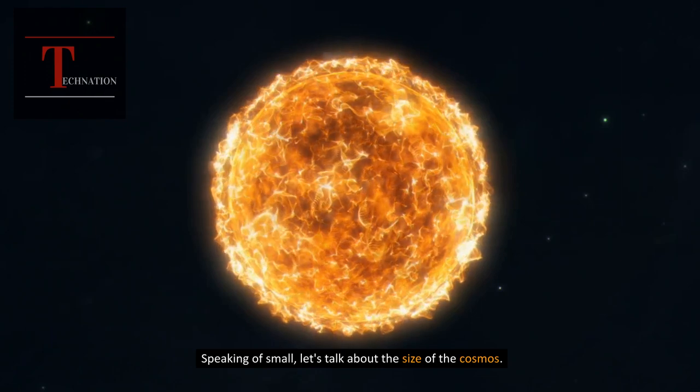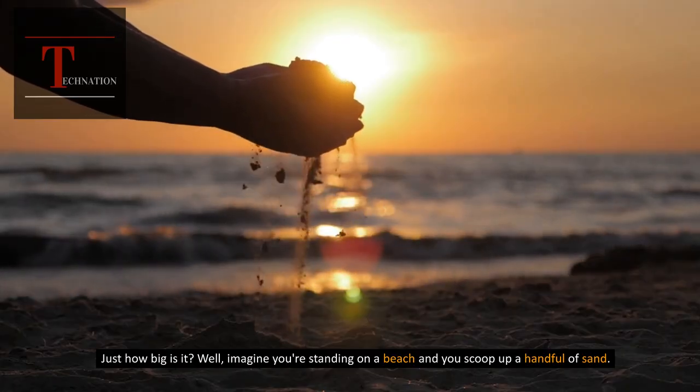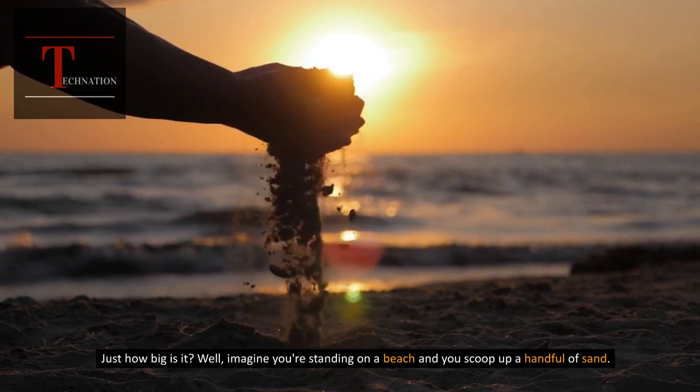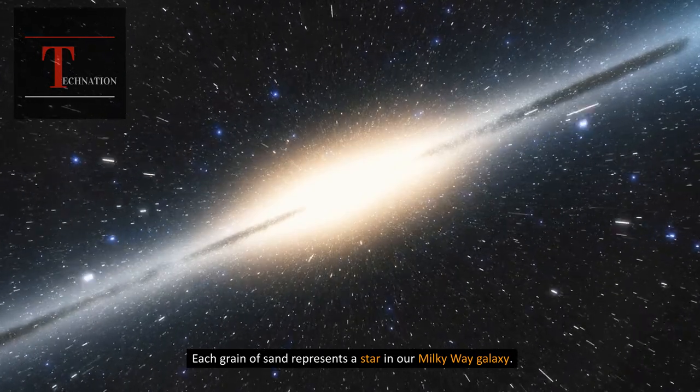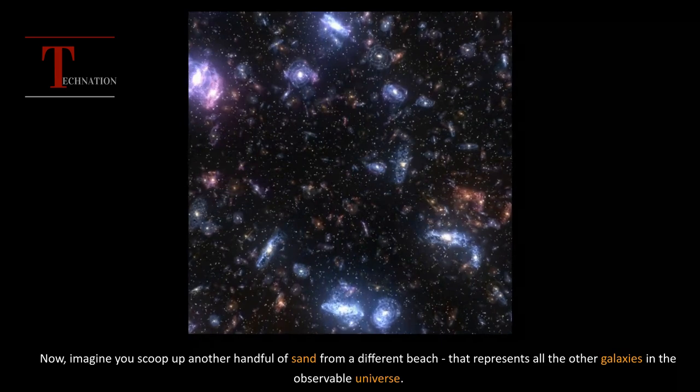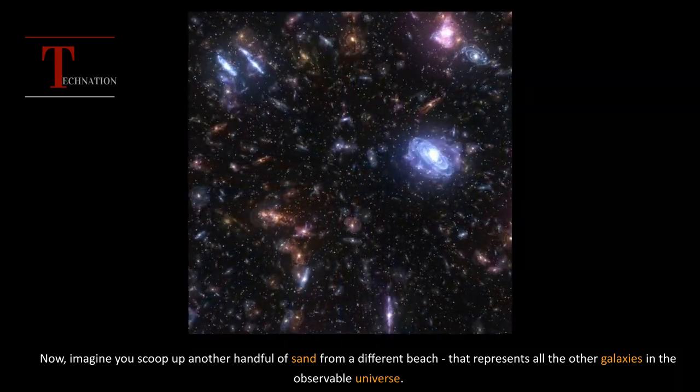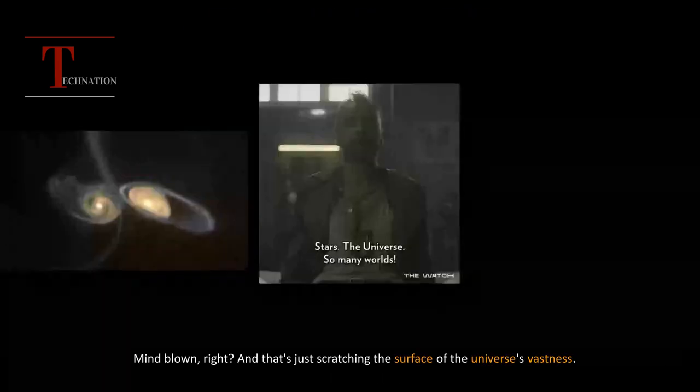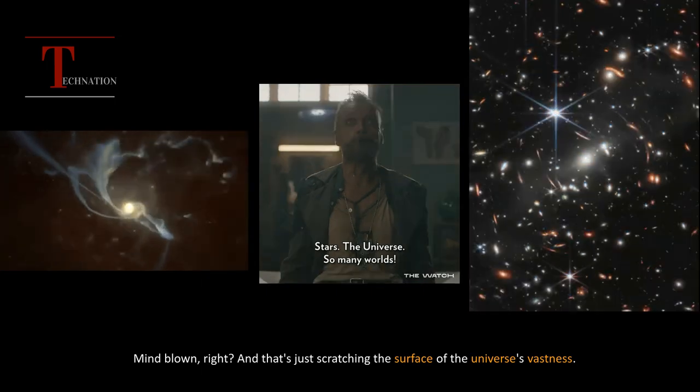Speaking of small, let's talk about the size of the cosmos. Just how big is it? Well, imagine you're standing on a beach and you scoop up a handful of sand. Each grain of sand represents a star in our Milky Way galaxy. Now, imagine you scoop up another handful of sand from a different beach, that represents all the other galaxies in the observable universe. Mind blown, right? And that's just scratching the surface of the universe's vastness.